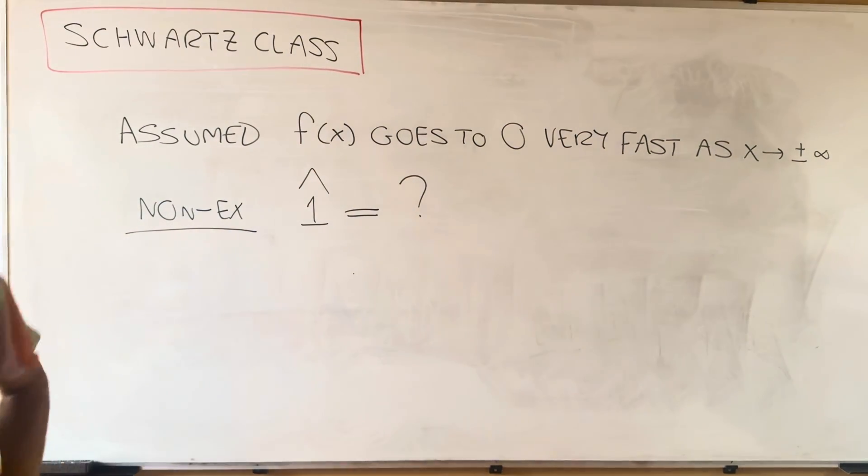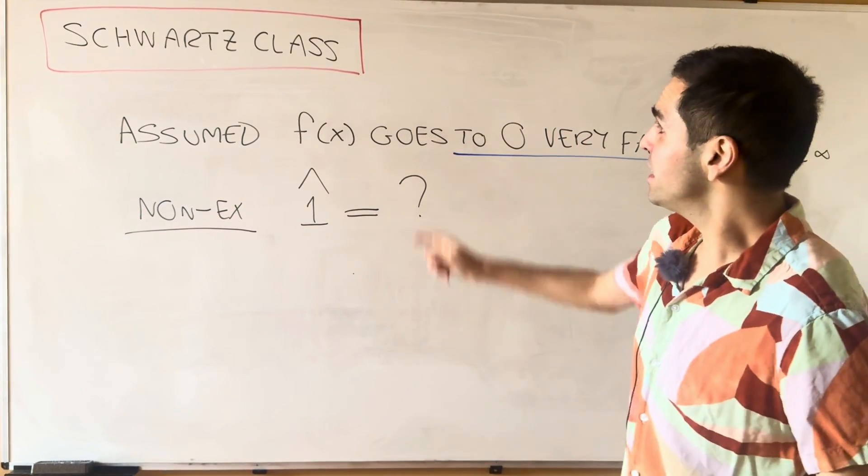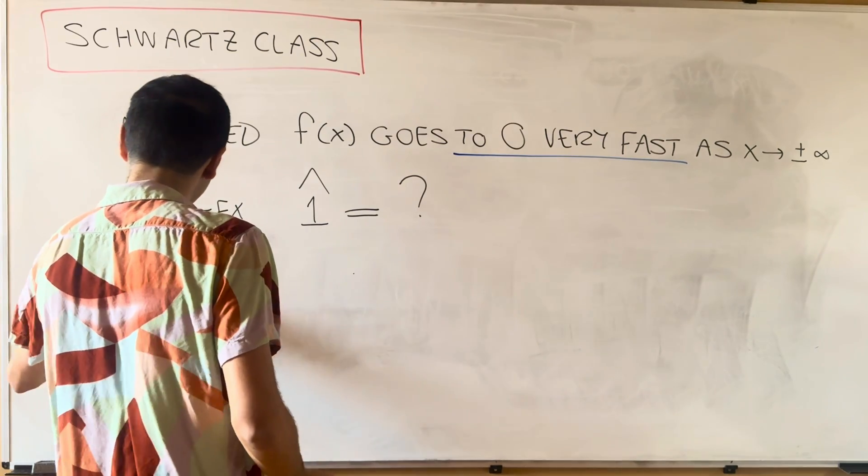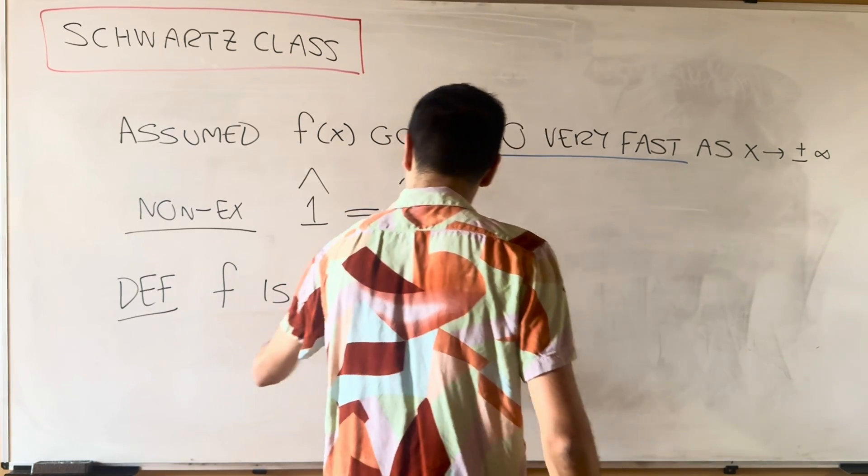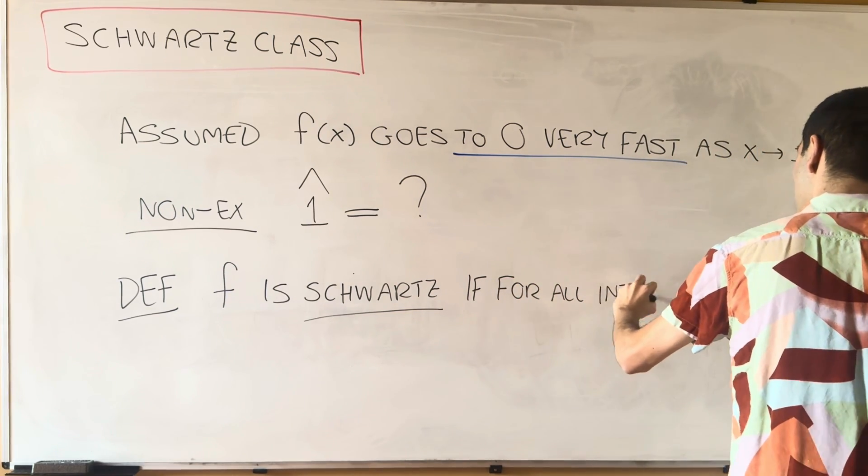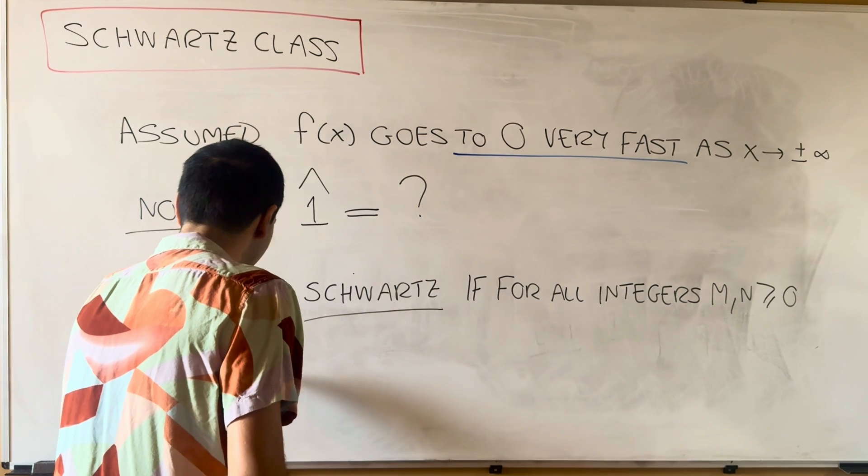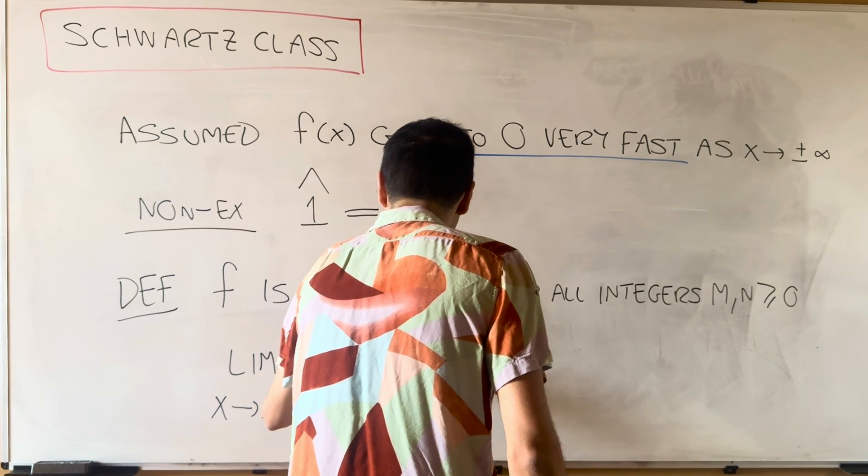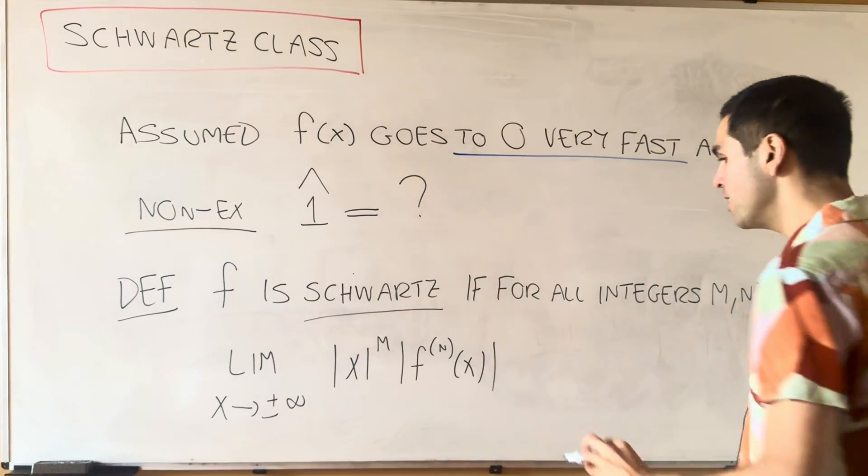Now the question is, what does it mean to go very fast to zero as x goes to plus or minus infinity? This is precisely what the Schwarz class answers. So definition: f is Schwarz if for all integers m and n greater or equal to zero, the limit as x goes to plus or minus infinity of x to the m, f to the nth derivative of x, this whole thing goes to zero.